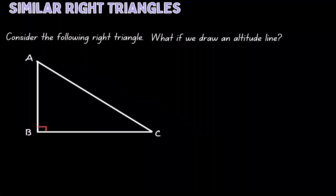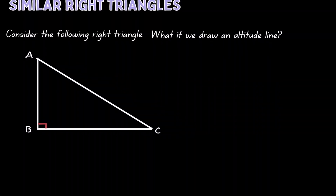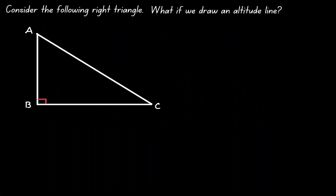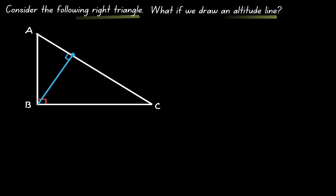Welcome, let's discuss similar right triangles. Let's consider this right triangle on the left. What would happen if we introduce an altitude line? Starting from B, let's draw a line that is perpendicular to the opposite side. Let's call this intersection point D.